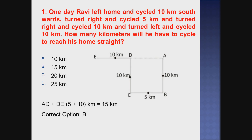Question number 1. One day Ravi left home and cycled 10 km southwards, turned right and cycled 5 km, and turned right and cycled 10 km, and turned left and cycled 10 km. How many km will he have to cycle to reach his home straight?